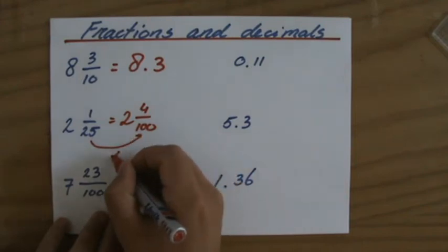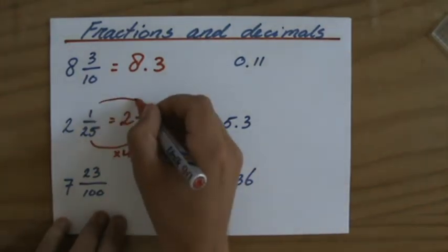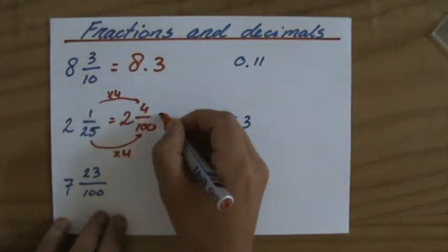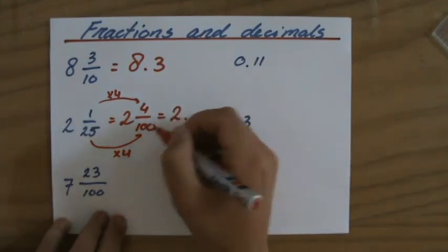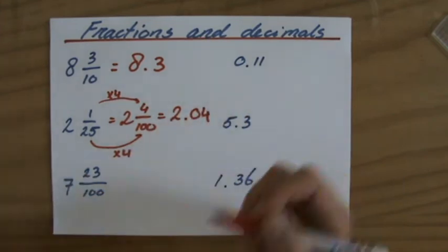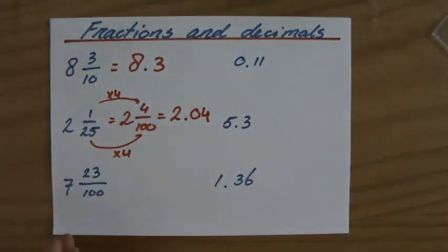That's a factor of 4. You can multiply it by, but then also the numerator, please. So that would be 2 and 4 over 100, so 0.04. Be careful there, not 2.4, because that would be 4 tenths, or 40 hundredths. It's 2.04, 4 hundredths.